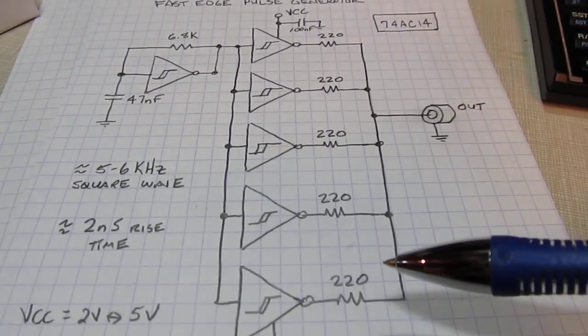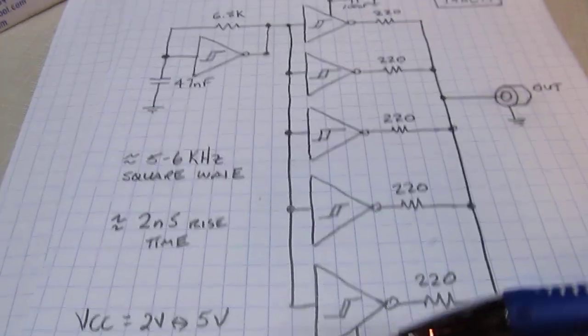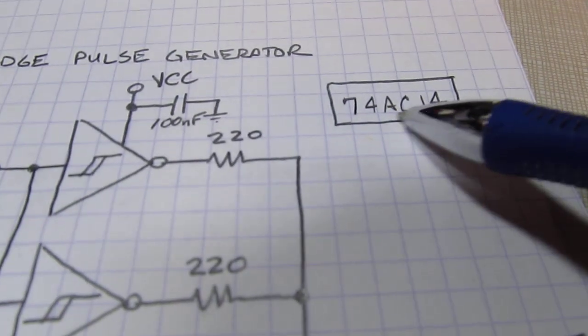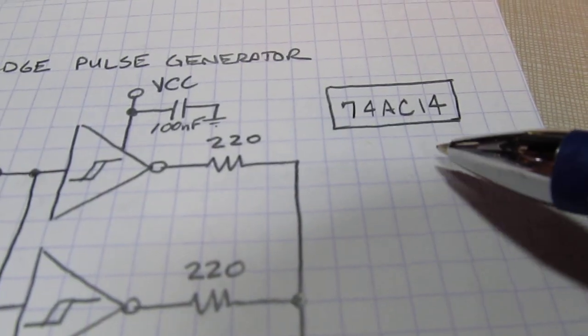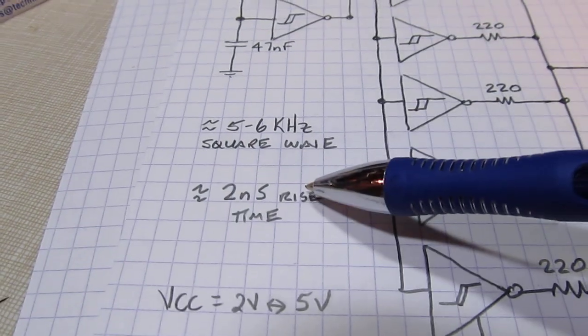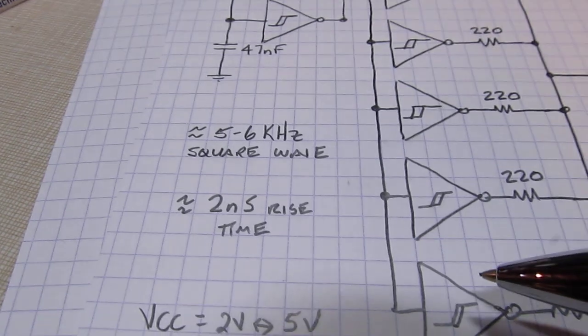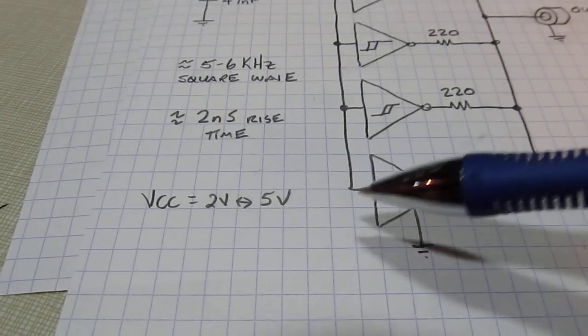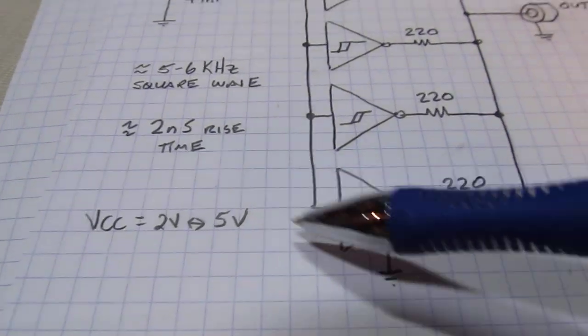The nice thing about this 74AC14, the AC advanced CMOS version, has some pretty fast edges, about two nanosecond rise time. Those fast edges are going to help us to resolve what that signal looks like.